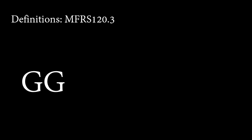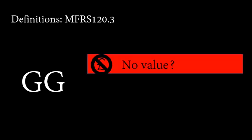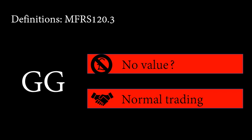Government grants in this standard exclude those assistance in a form that cannot reasonably have a value placed upon them, such as free technical or marketing advice and the provisions of guarantees. It also excludes transactions with government which cannot be distinguished from the normal trading transactions of the entity, such as a government procurement policy that is responsible for a portion of the entity's sales. The existence of the benefits in this case might be unquestioned, but any attempt to segregate the trading activities from government assistance could well be arbitrary.